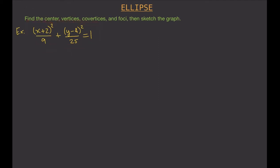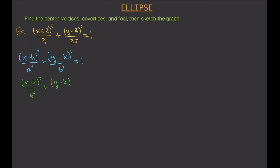You have to remember that there are two equations for an ellipse. One equation is (x − h)² / a² + (y − k)² / b² = 1, and the other is (x − h)² / b² + (y − k)² / a² = 1. For both equations, a is greater than b.